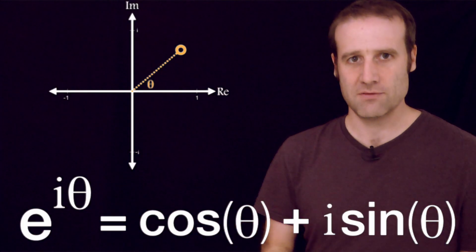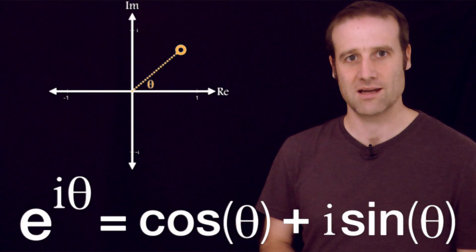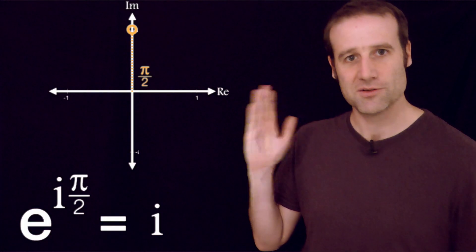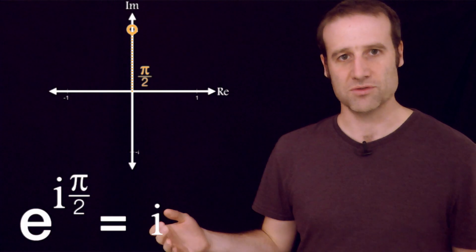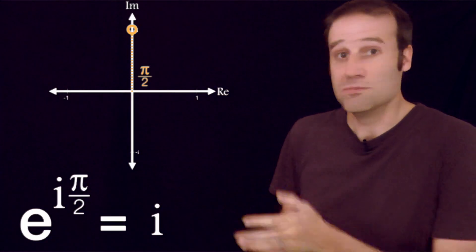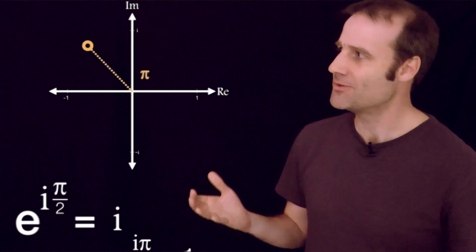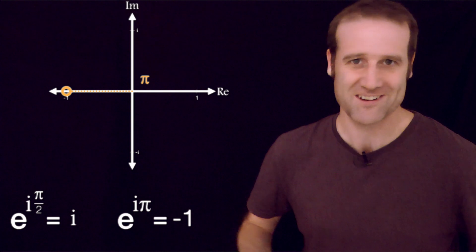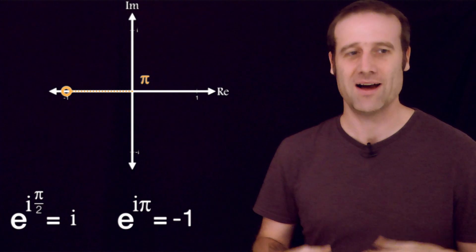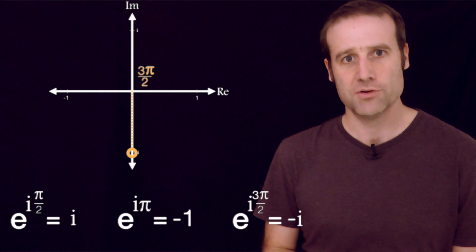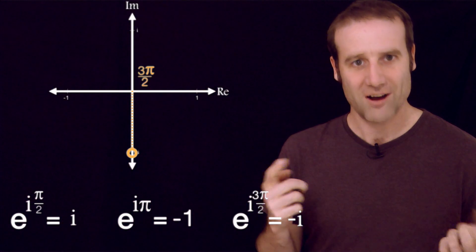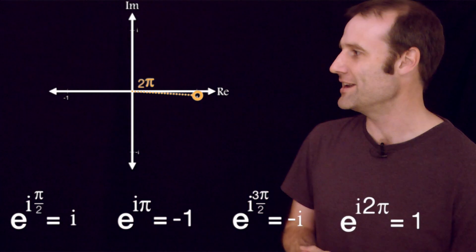We can now put some values in for theta, and we get some fantastic identities. If our angle is pi on 2, e to the i pi on 2 equals i. Pretty straightforward. Here's the famous one. If we go through a full 180 degrees, e to the i pi equals negative 1, but we can carry on. e to the i, 3 pi on 2 equals negative i. That's kind of fun. And finally, e to the i, 2 pi just equals 1.